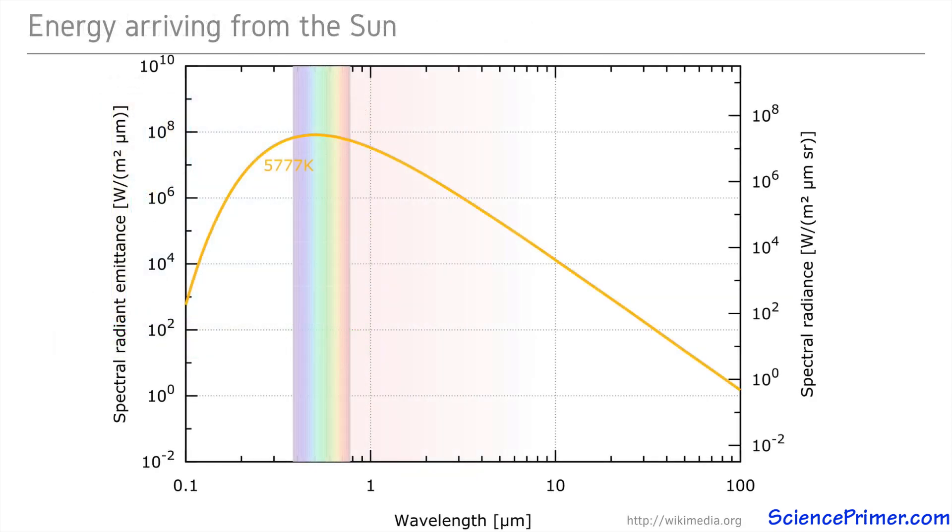Solar energy arriving at the top of the atmosphere has a profile that resembles black body radiation from an object with a temperature of about 5,700 Kelvin.